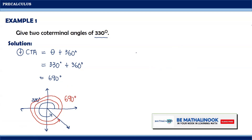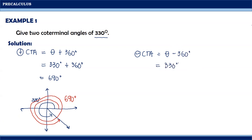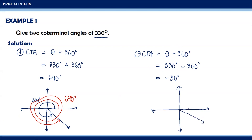For the negative coterminal angle, we can subtract 360 degrees from the given angle. Therefore, we will have 330 degrees minus 360 degrees, which is equal to negative 30 degrees. Illustrating the two angles: remember that 330 degrees lies in the fourth quadrant, so this is our given 330 degrees, and our negative coterminal angle, which is negative 30 degrees, is this one. Notice that 330 degrees and negative 30 degrees are coterminal angles.